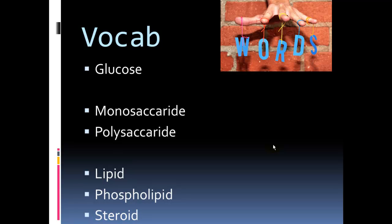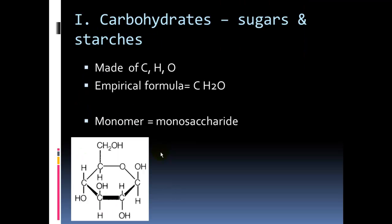So some vocabulary words for you. Glucose, our monosaccharide. So mono, we've seen before. Mono meaning one. Poly meaning many. So monosaccharide, one sugar. Polysaccharide, many sugars. So this is going to be the polymers that we talked about in our last, but specifically the ones made of sugar. Lipids, our fats, our phospholipid, which is a kind of lipid, and our steroid, another kind of lipid molecule.